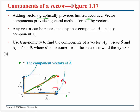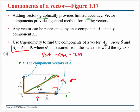You get a nice right triangle, and using SOH-CAH-TOA: the y-component ay is the opposite side, and the x-component ax is the adjacent side. So ay = |A| sin θ and ax = |A| cos θ.